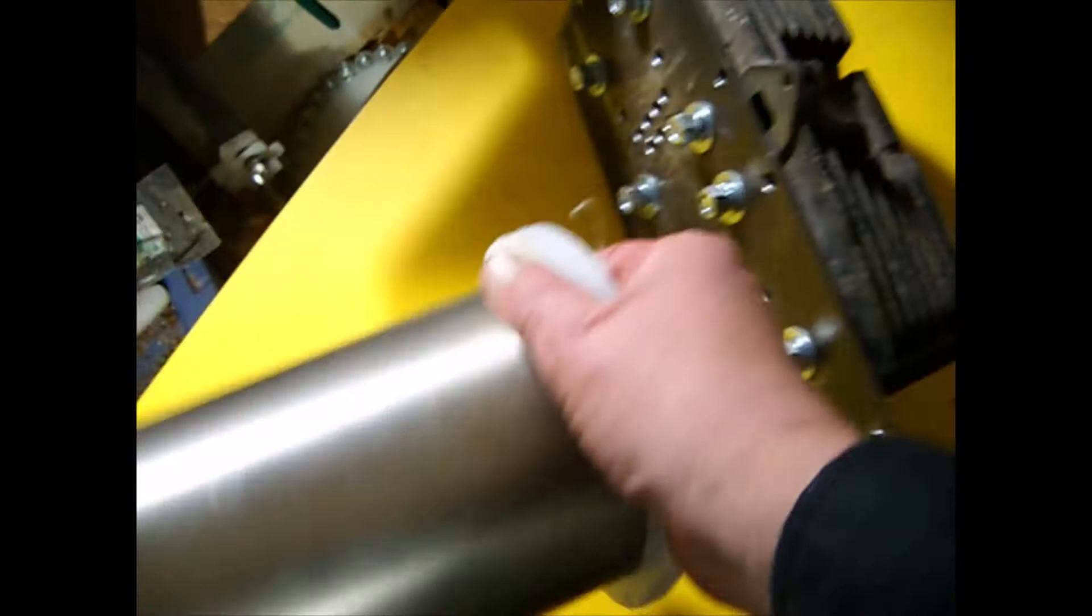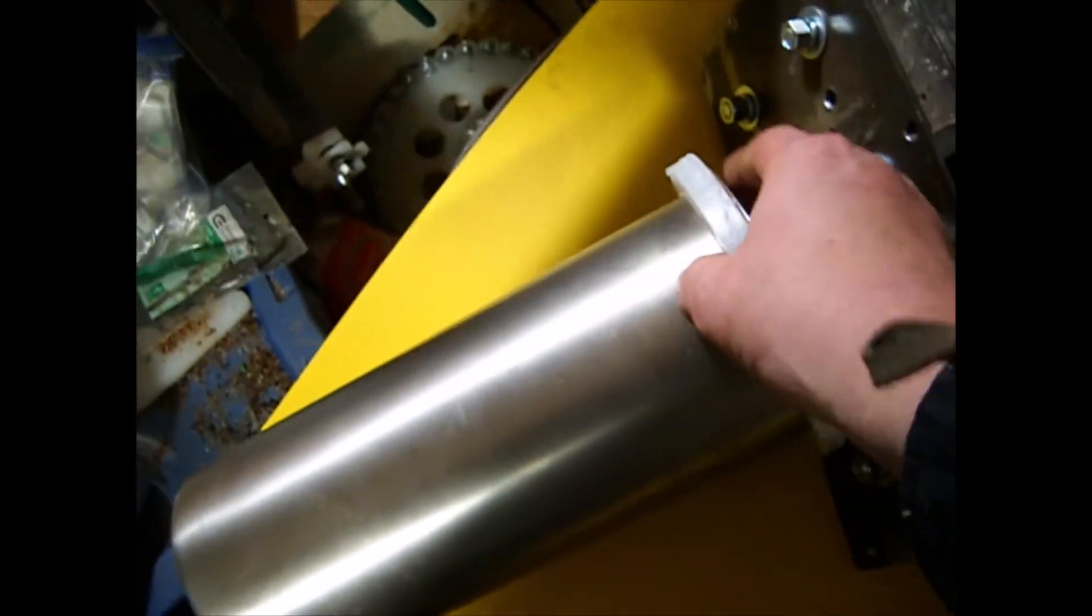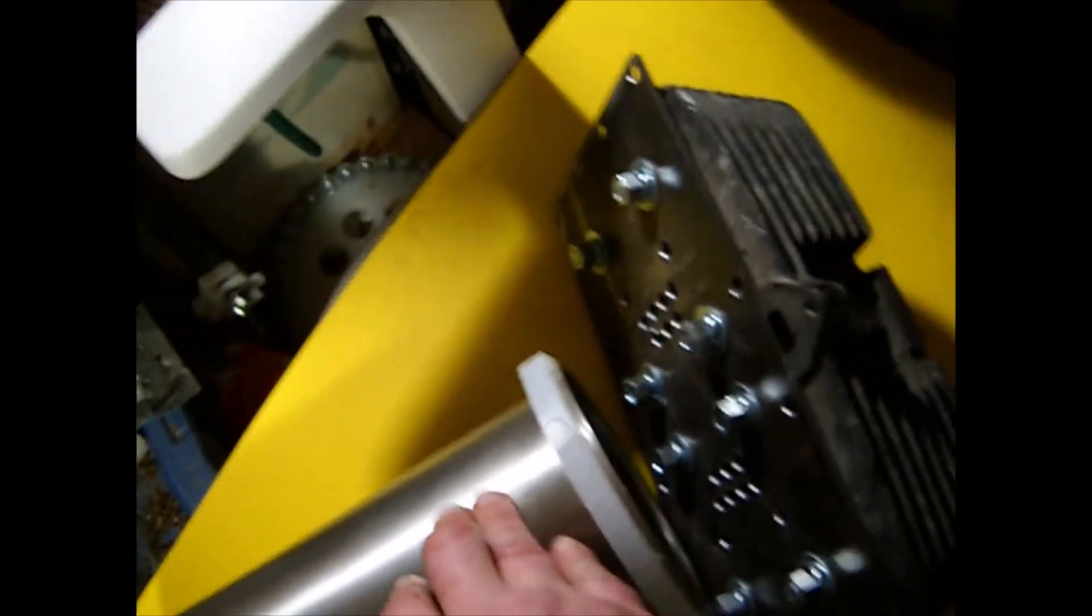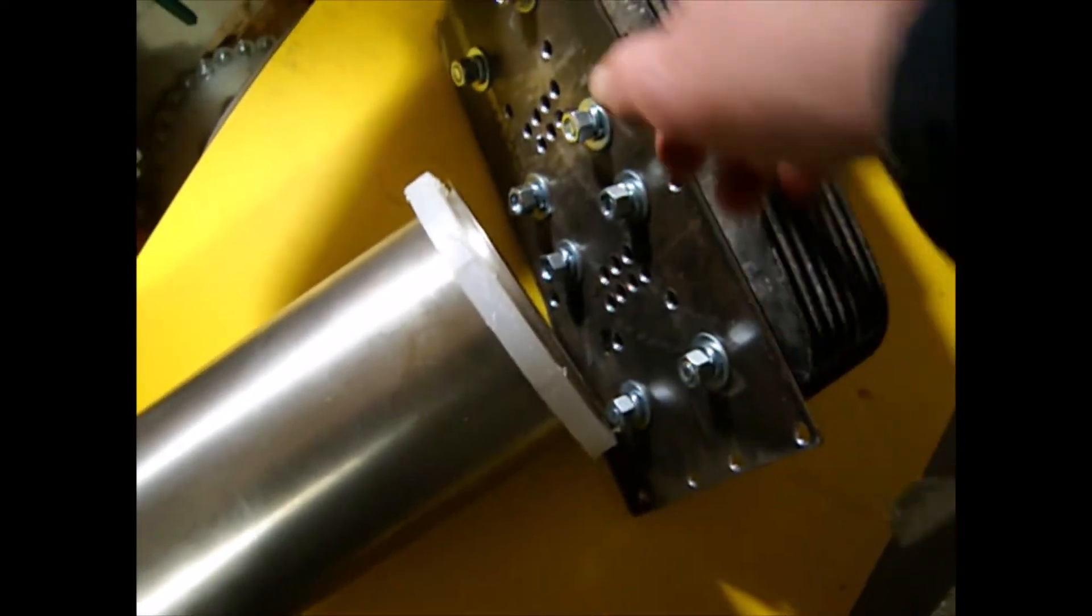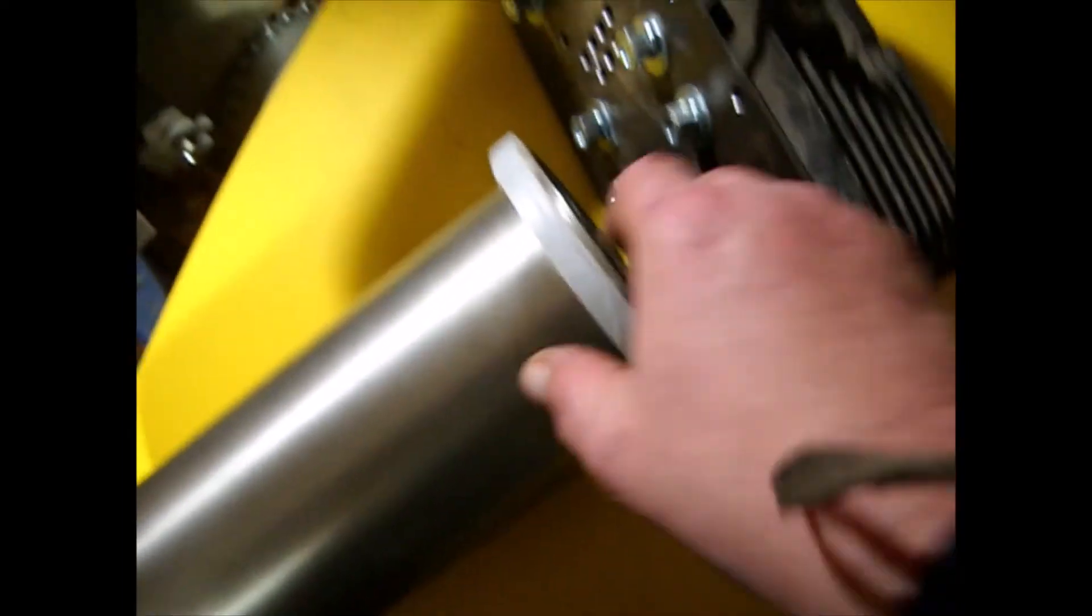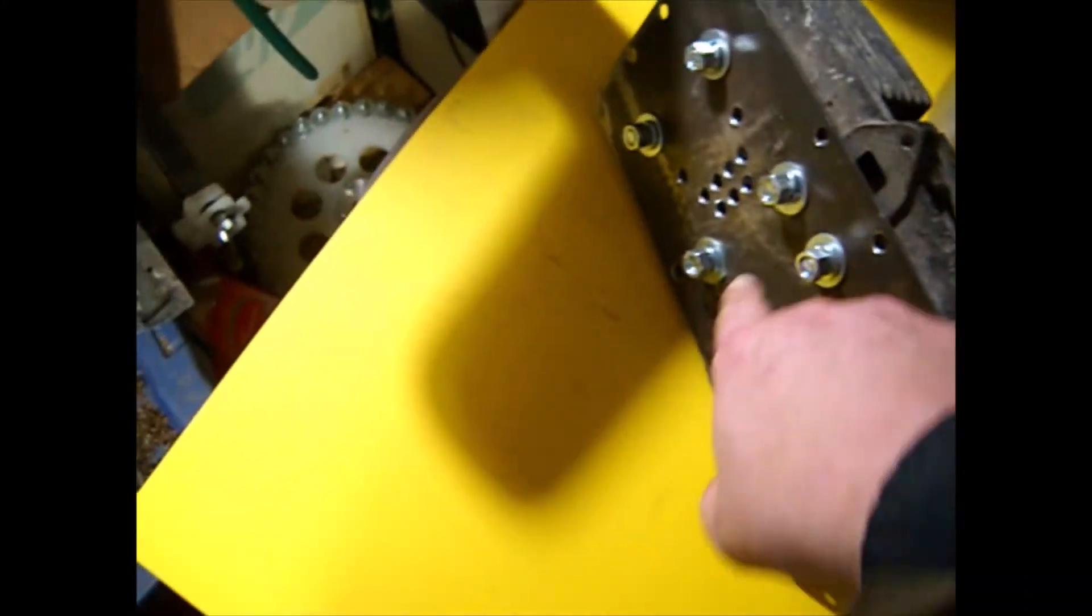The next problem we have to solve is how to mount the displacer chamber to this steel plate. This is just a prototype - I've got to redo the steel plate because when I made the template, I forgot a hole, so we'll have to correct that feature.